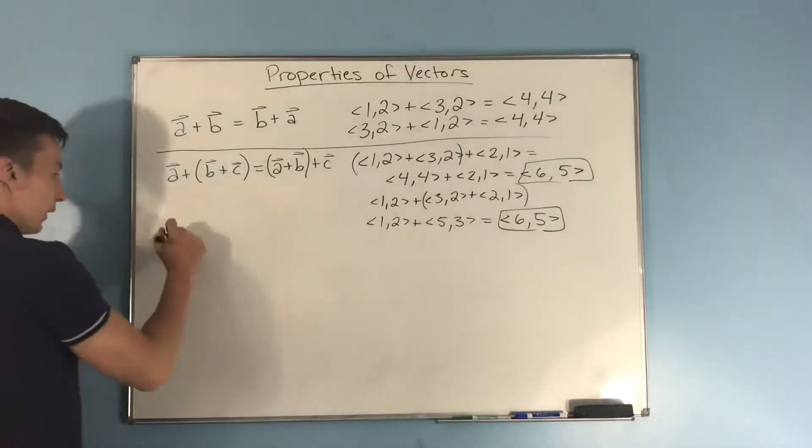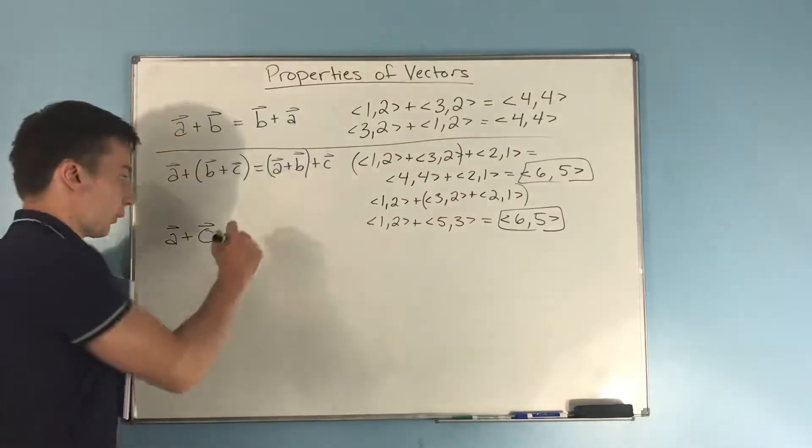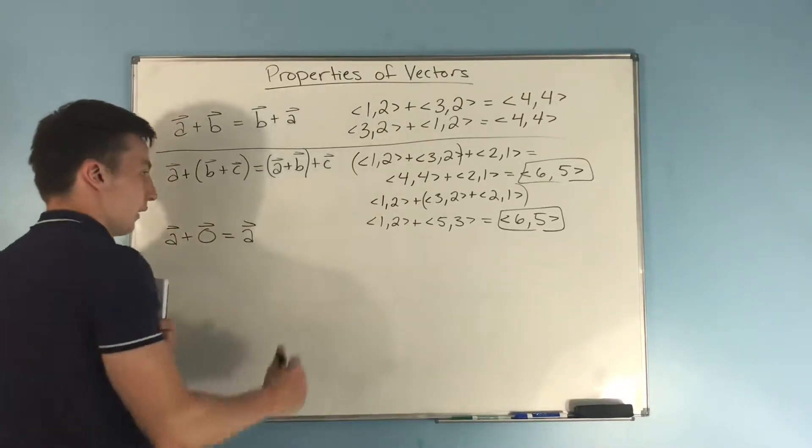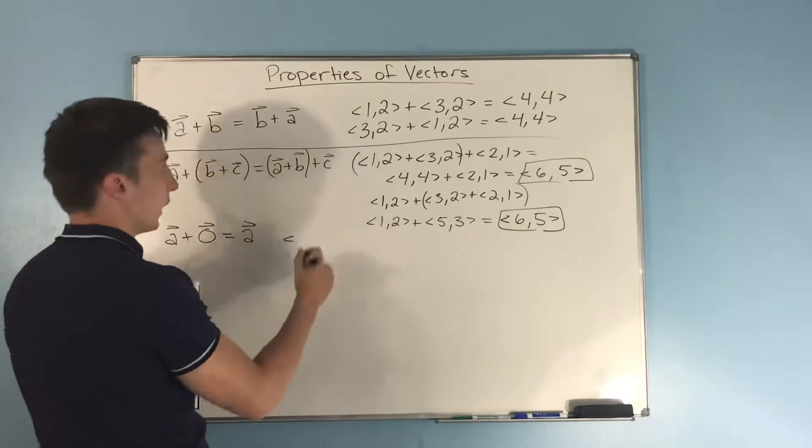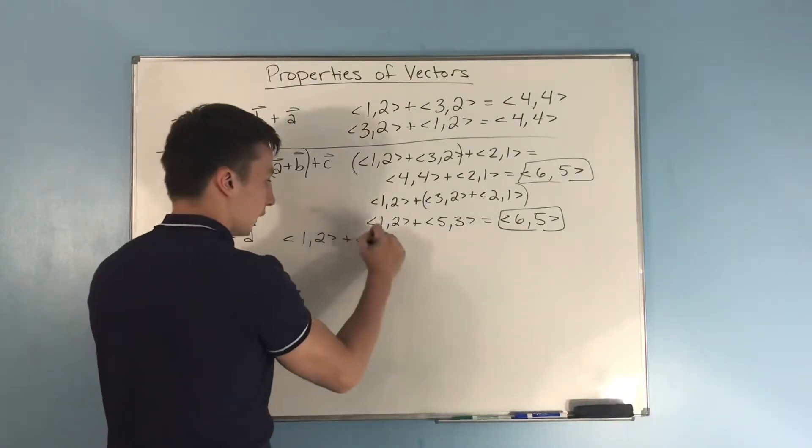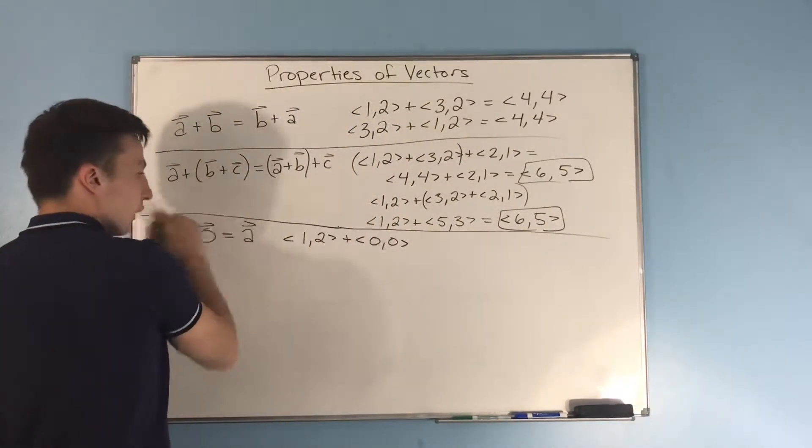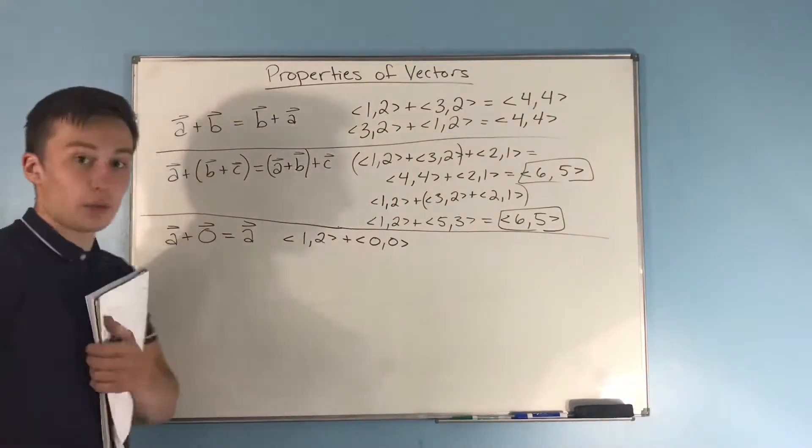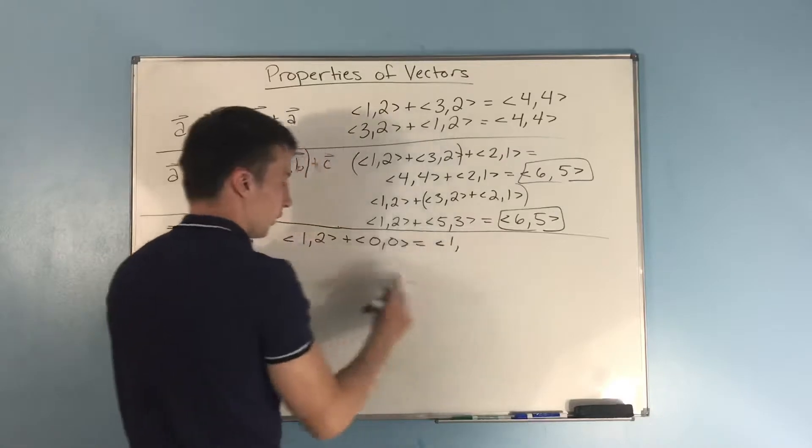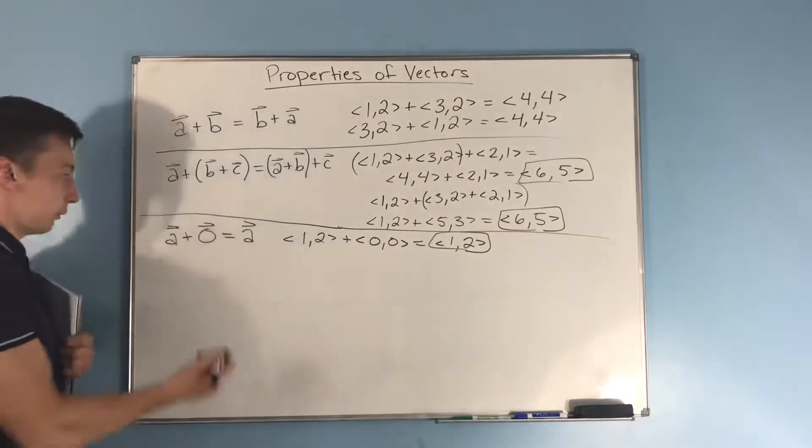The next property is also pretty obvious, any vector plus the 0 vector is just going to be that vector that you started out with. Say that you have vector A, which we've been saying is 1,2. A 0 vector basically is just a vector that has no direction or magnitude, so it just has components 0. If you add this through, 1 plus 0 is 1, 2 plus 0 is 2. So you get the original vector A.